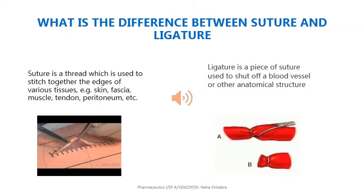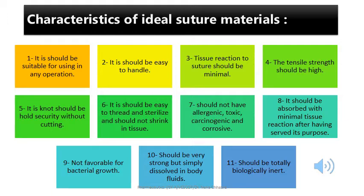In common language you can also say that a suture is a thread used to stitch together the edges of various tissues like skin, muscle, or tendon. But I would suggest you go with the more technical definition.